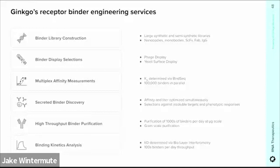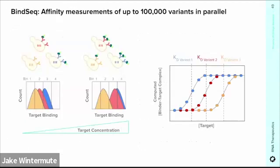One service I'd like to highlight is BindC, which can be used to determine the KD for thousands of binder variants in parallel. A library of binders in yeast surface display format is exposed to a fluorescently labeled target molecule at a range of concentrations. The highest affinity binders will light up at lower concentrations while the lowest affinity binders will only light up at the highest concentrations. For each concentration of target, we use fluorescence-activated cell sorting to sort each population into bins based on the degree of binding, then deep sequence each bin so we can infer how much each variant is binding at that concentration. Combining data from all the target concentrations lets us determine the KD of each variant, ultimately giving us an enormous dataset that can be used to deliver a binder with specific properties and/or train a model to inform future designs.